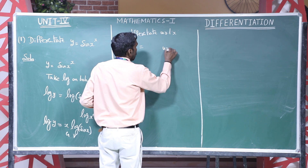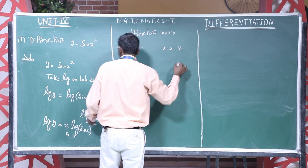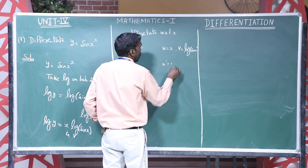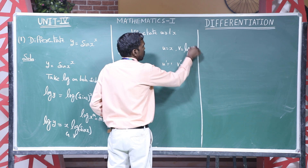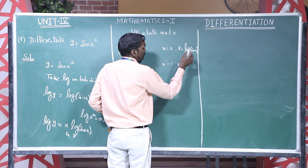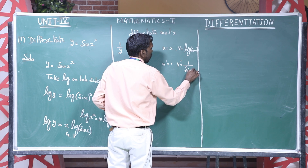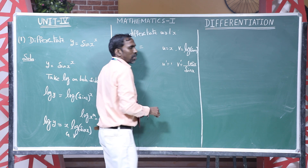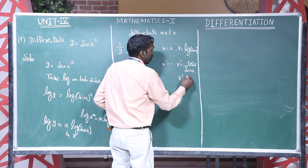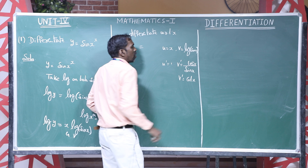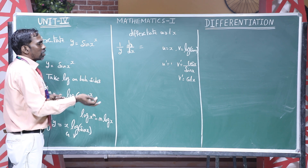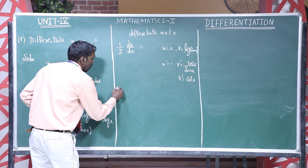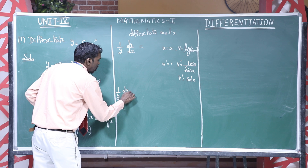Let u equal to x and v equal to log sin x. Then u dash equals 1. For v dash, differentiation of log sin x gives 1 by sin x into differentiation of sin x. Differentiation of sin x is cos x, so v dash equals cos x by sin x, which is cot x. Now applying the product rule u v dash plus v u dash on the right-hand side, with the left-hand side being 1 by y into dy by dx.